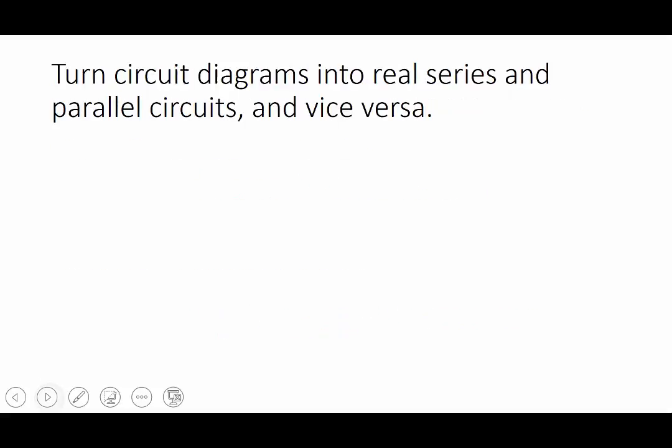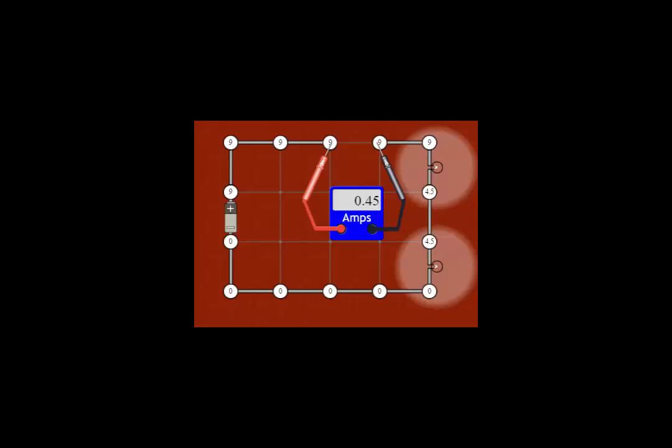The last thing we need to know in this video is about turning circuit diagrams into circuits. So here's a series circuit. We've got two bulbs and an ammeter in this circuit, and that's connected up to a battery. So how would we draw that using circuit symbols?